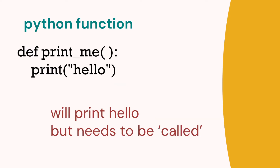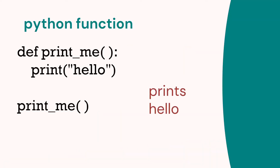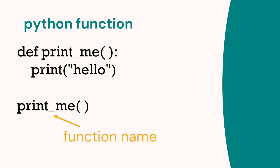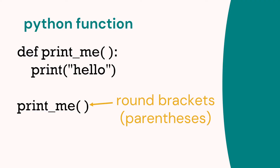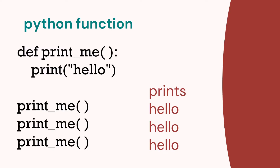This function will print hello but it needs to be called. So let's call a function. Here we've got our code again, and underneath you see the function name print_me — that calls the function. We've got the function name and the round brackets. That's how we call a function and that prints hello. We can print hello twice by calling the function twice, or three times by calling it three times.